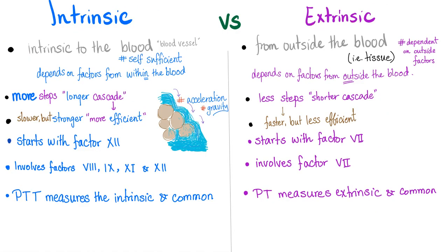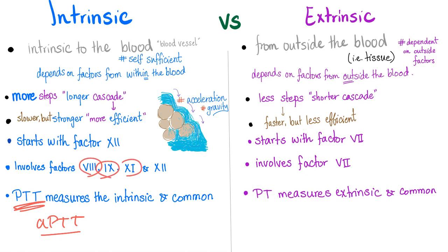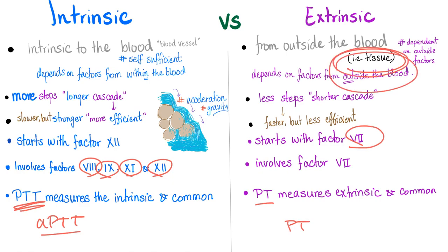We compared the intrinsic and extrinsic pathway in the previous video. Extrinsic is shorter and less efficient; intrinsic is longer but more efficient. How do we measure intrinsic? The longer PTT — because the pathway is longer, you measure it with the longer word APTT. The shorter extrinsic you measure with the shorter word PT. Crazy mnemonic: APTT has four letters and four factors: 8, 9, 11, 12. PT has two letters and two factors: factor 7 and factor 3, the tissue factor.